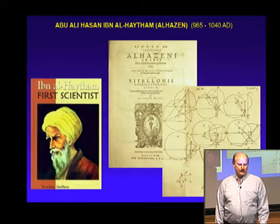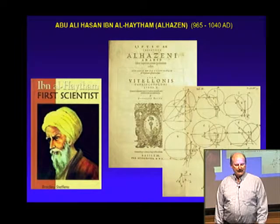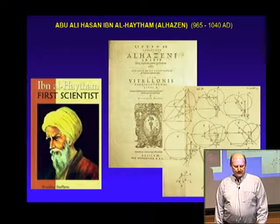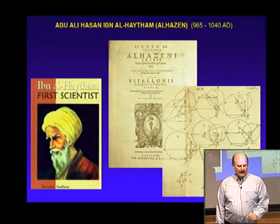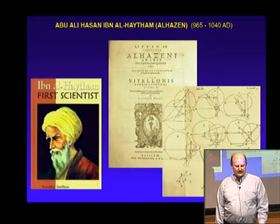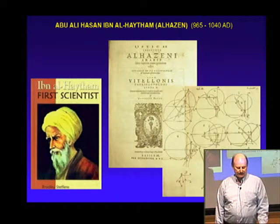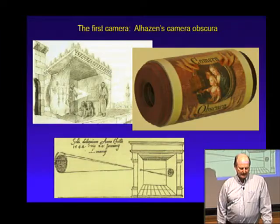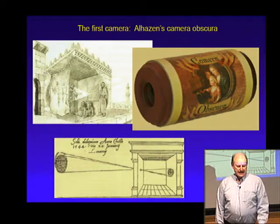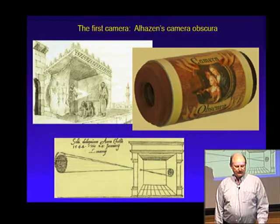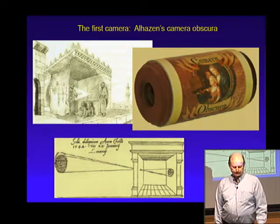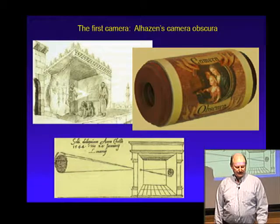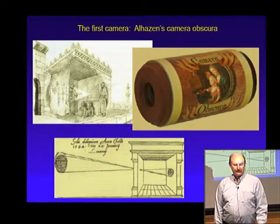Al-Hazan combined an inquisitive mind, an extremely methodical approach to his work, together with outstanding skills in geometry and mathematics. Those three pieces are the critical elements if you're contemplating a career in science. Al-Hazan didn't start from scratch — he built on the ideas of Ptolemy, going back to the Greeks and other cultures, and he also looked at contributions from ancient Chinese cultures.